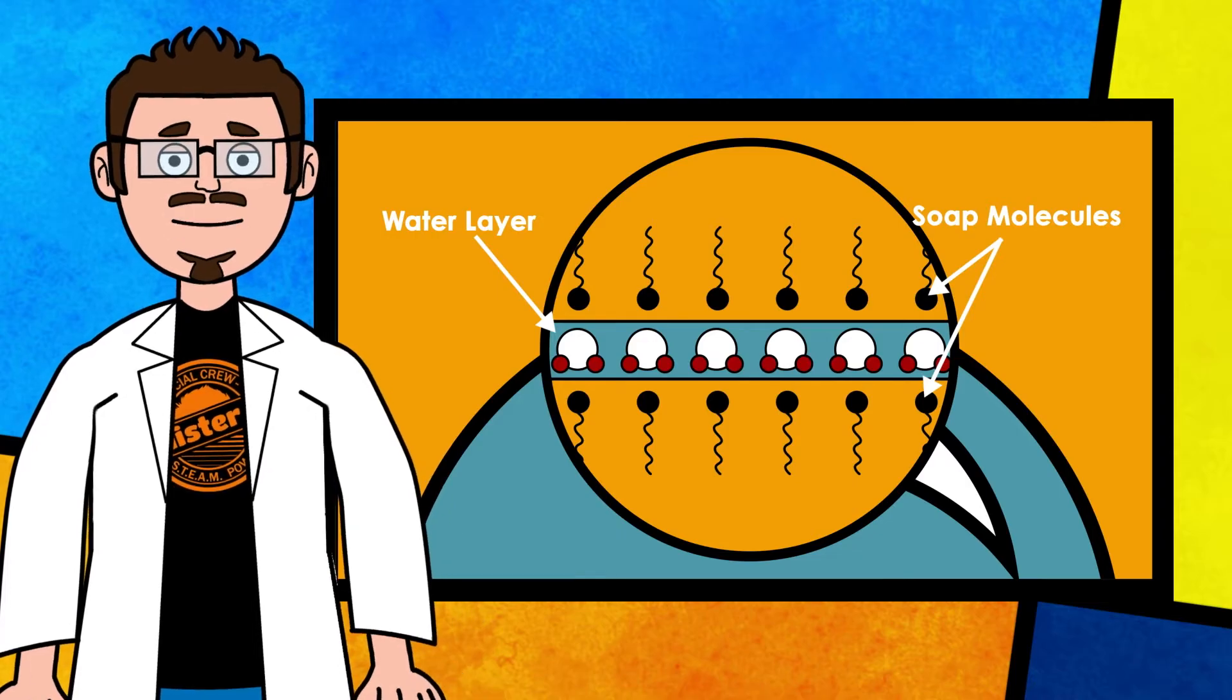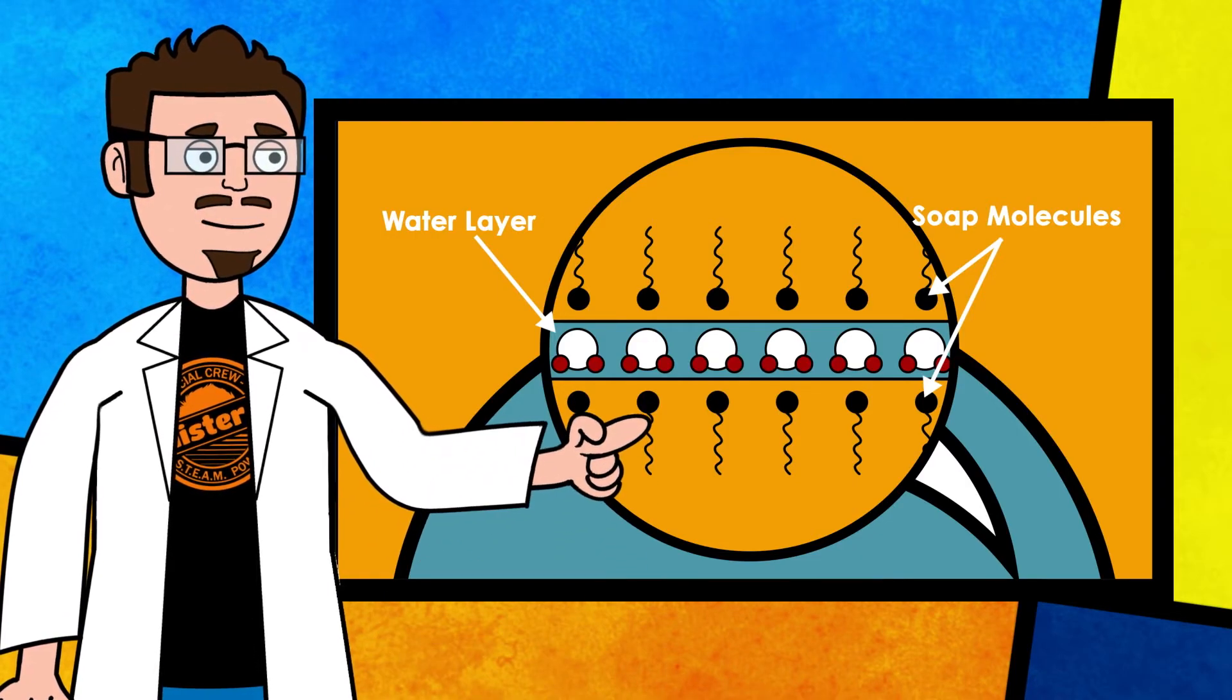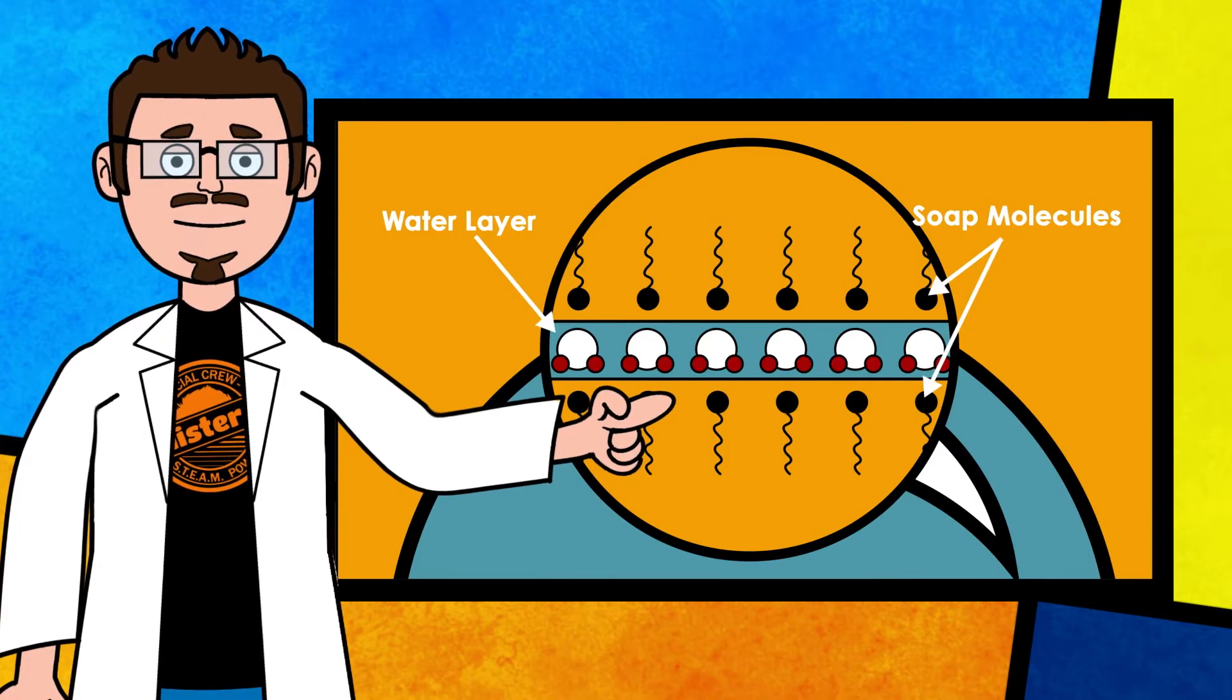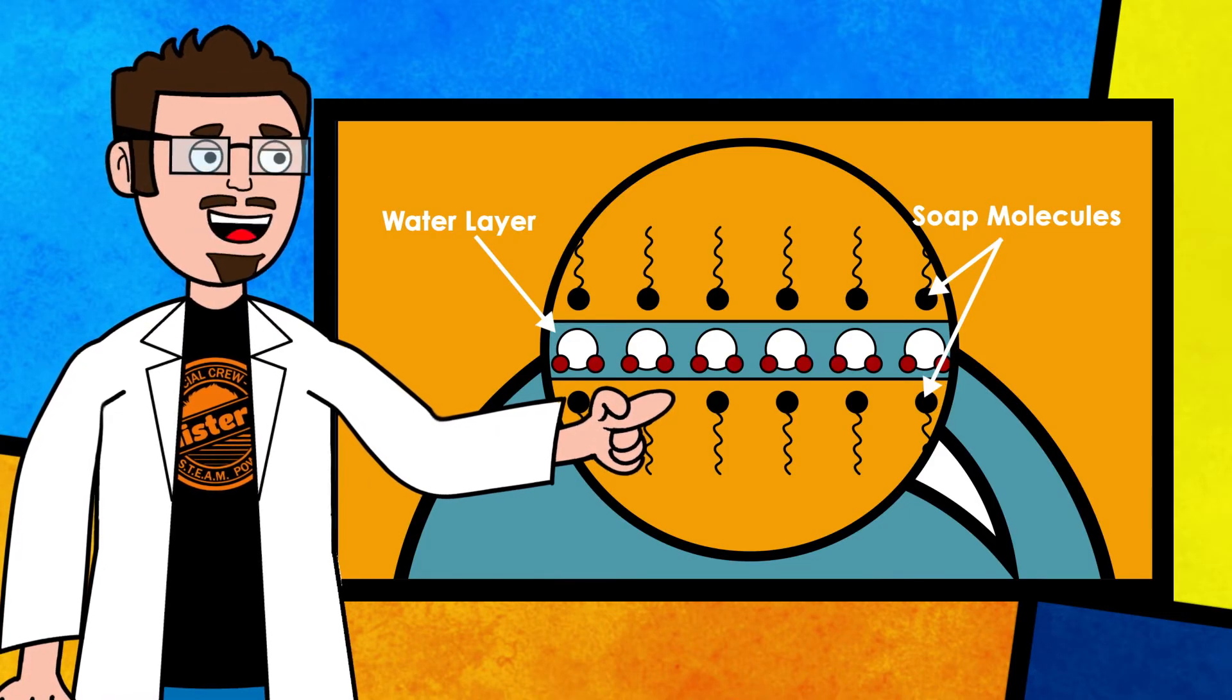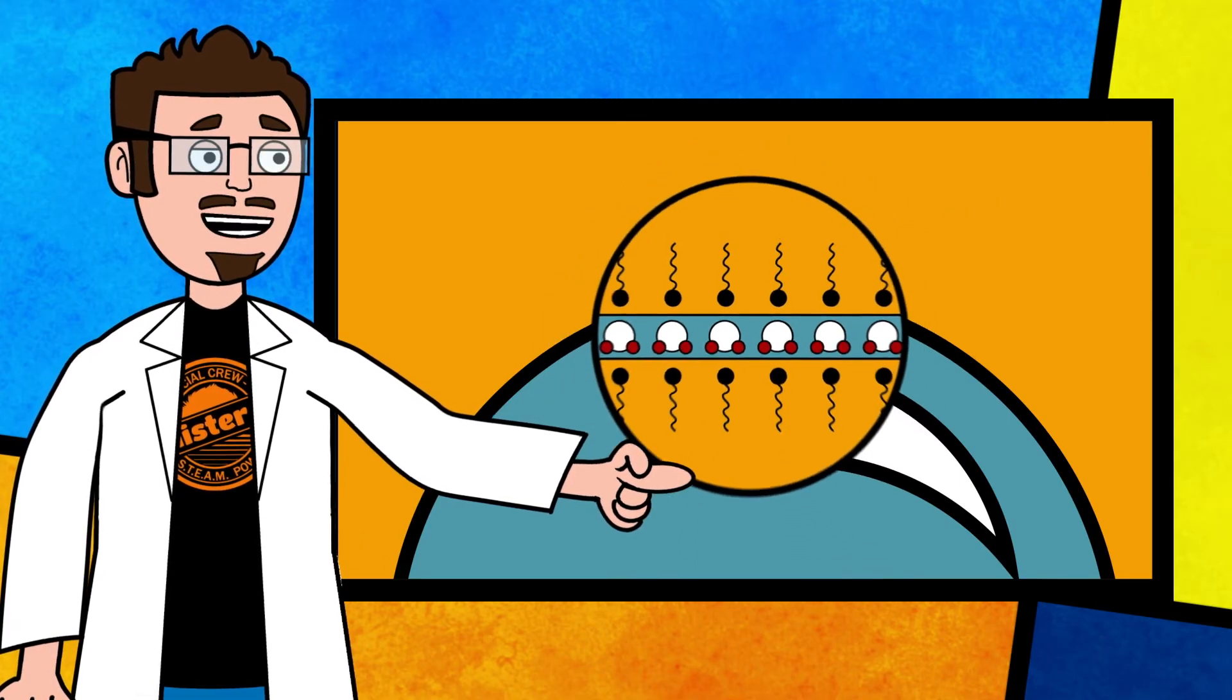And if we look really closely we can see that those soap molecules are all lined up in a similar fashion. The hydrophilic end of each soap molecule is attracted to the water molecules while the hydrophobic end is trying to stay away as far as possible.